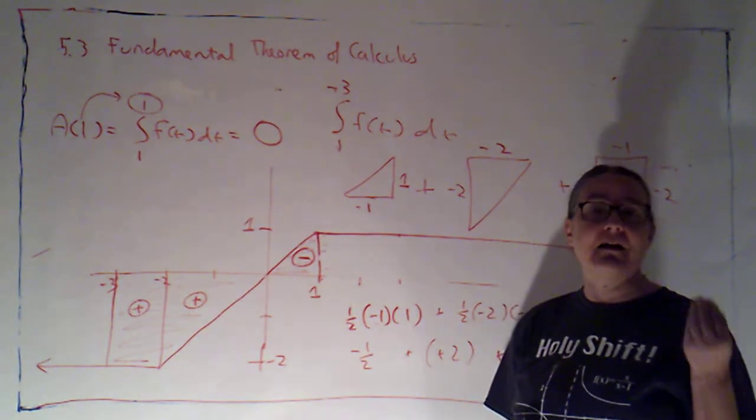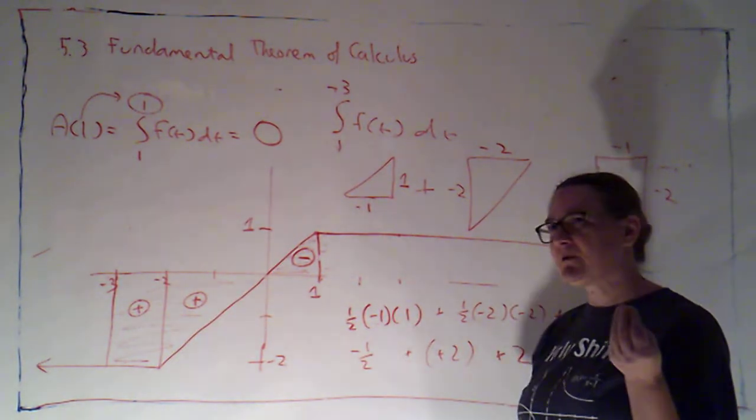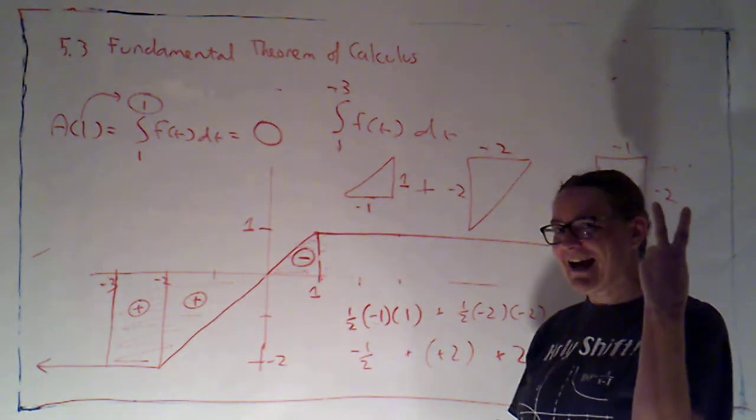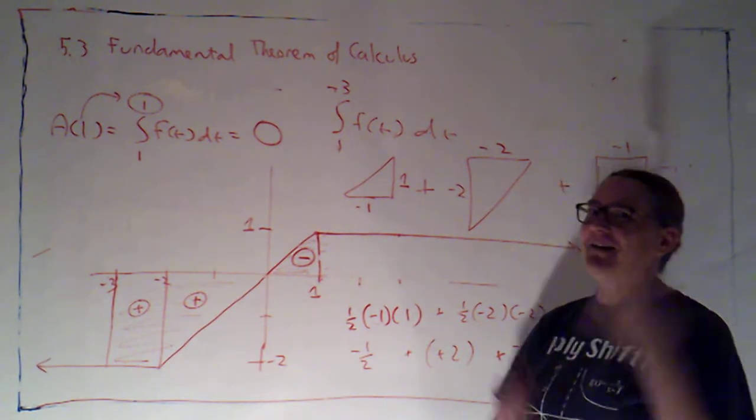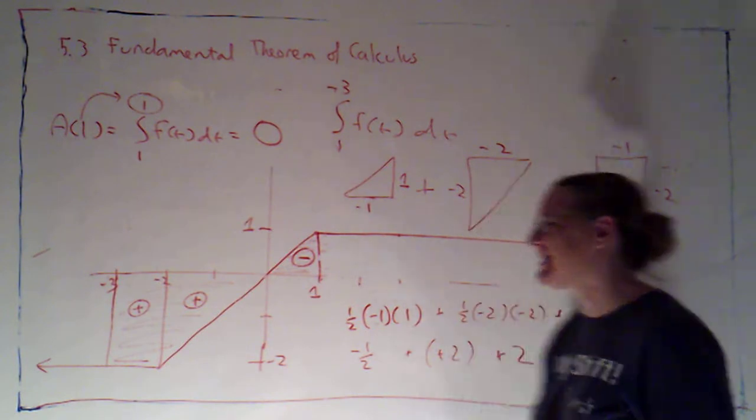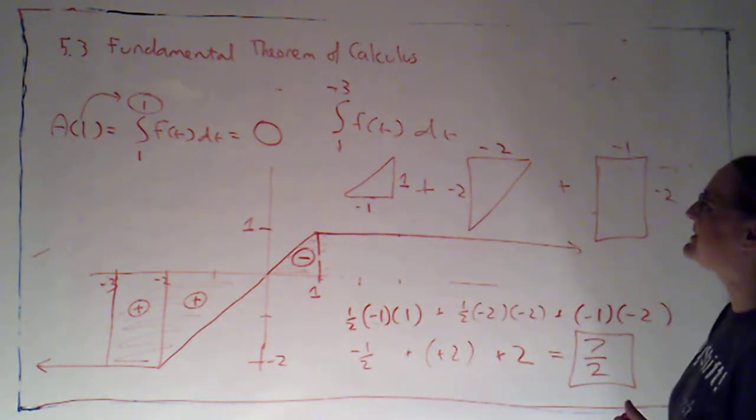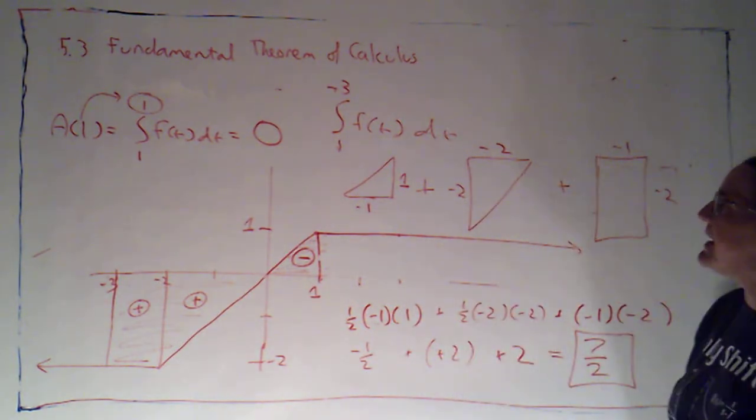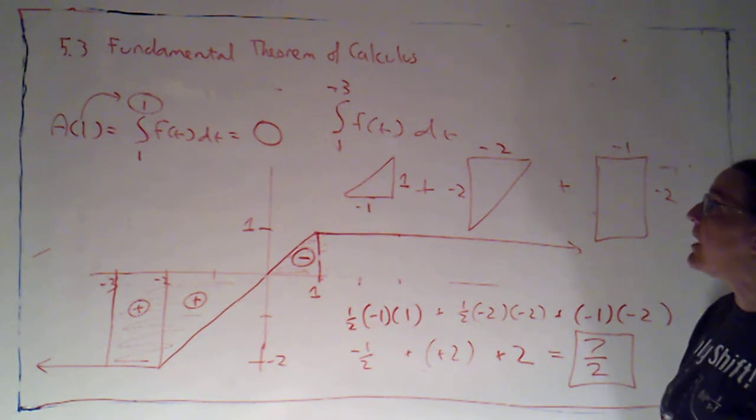Right now we're somewhat limited because we can find definite integrals by using area. We can take limits of Riemann sums. We've gotten pretty good at that actually but we are limited in the types of things we have formulas for because for sums we can add up constants, i's, i squareds, and i cubed. So if anything more complicated shows up than our Riemann sum, we can set it up but we won't be able to simplify it. But we're building towards being able to work with more complicated things.